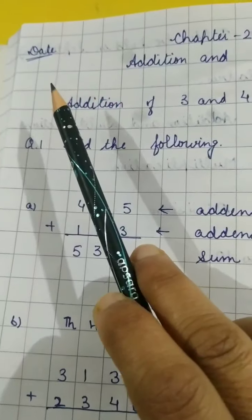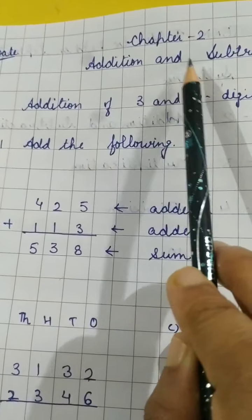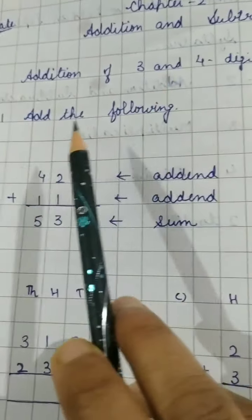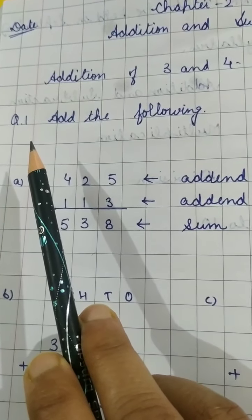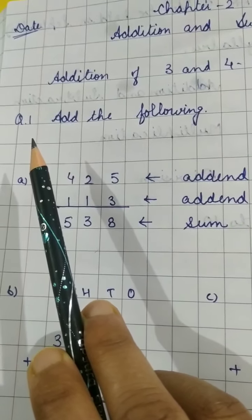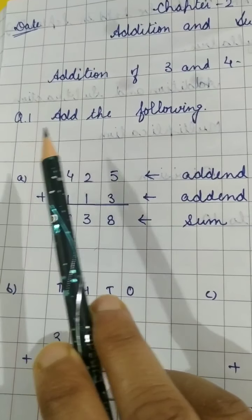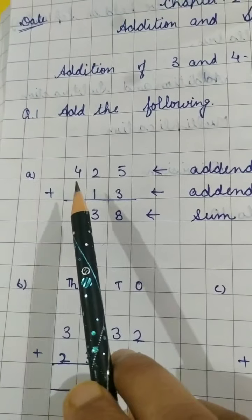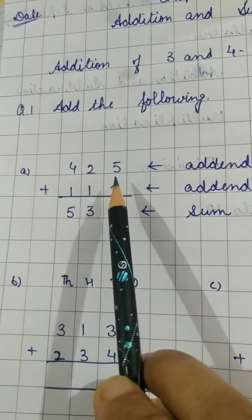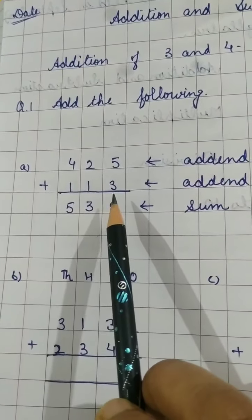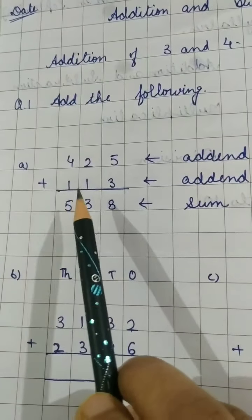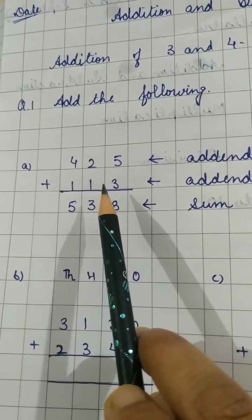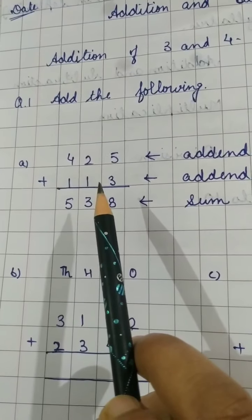Now let us put the date. Write chapter 2, name of the chapter addition and subtraction. First of all we will cover the addition part and then the subtraction part. Question number 1 is add the following. See I have the example here 425, 113. Both these are 3 digit numbers.